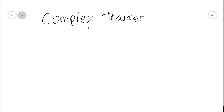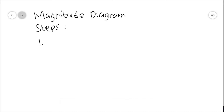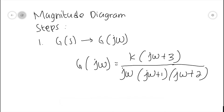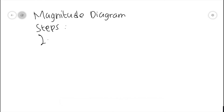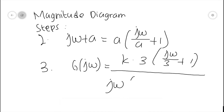After learning the basics of forming a Bode plot, we now dive into where it can get quite complex. Say we are given a complex transfer function: G(s) = k(s + 3) / [s(s + 1)(s + 2)]. First, we form the magnitude diagram. We change G(s) into G(jω), where G(jω) = k(jω + 3) / [jω(jω + 1)(jω + 2)]. We then rewrite each term in the form (jω/a + 1), so it becomes G(jω) = k·3·(jω/3 + 1) / [jω · (jω + 1) · 2·(jω/2 + 1)].